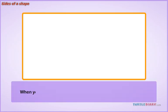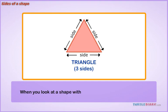When you look at a shape with three sides, you know it is a triangle. There are some other shapes that can be identified by looking at the number of sides.